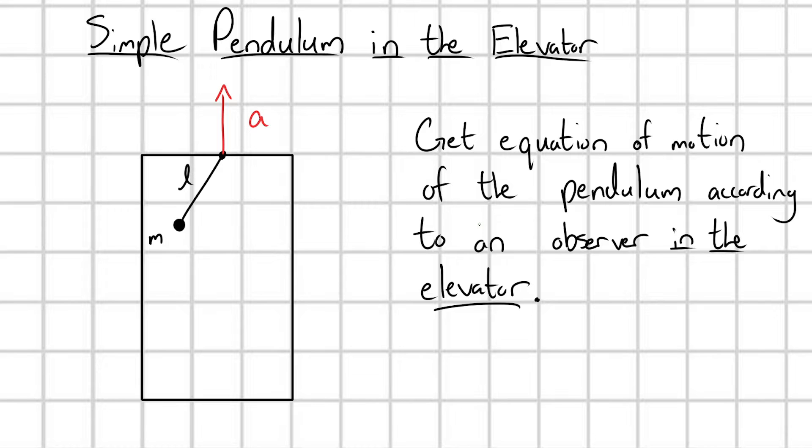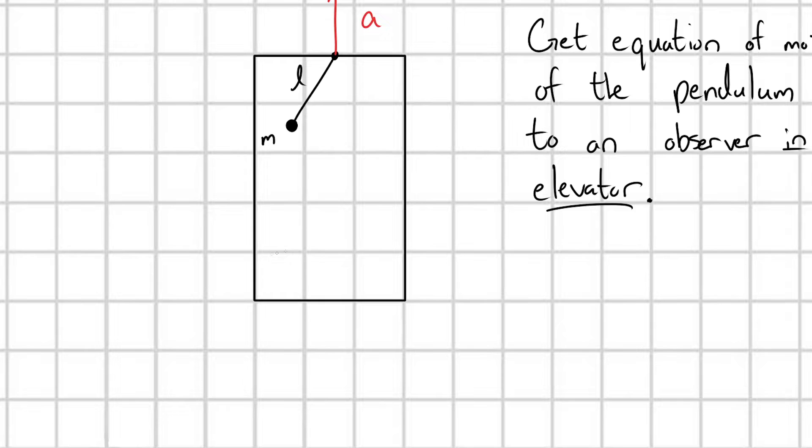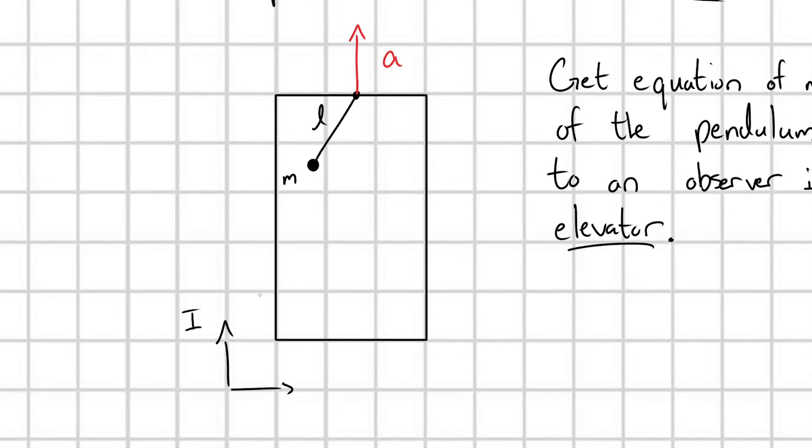With problems like this, I really like to draw a contrast between my inertial and my non-inertial frame by defining both. So first, an inertial frame would look like this. If I put a frame, I'll call it I for inertial frame, outside of my elevator, then it's watching the pendulum and the elevator accelerate upwards together. And in this inertial frame I, we'd be able to use Newton's second law totally normally. We wouldn't have to make any modifications to Newton's second law.